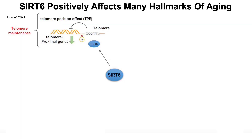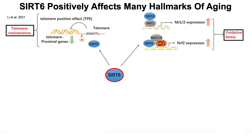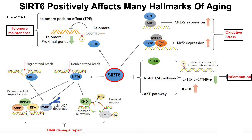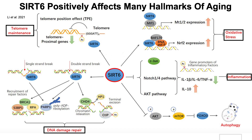How does SIRT6 extend lifespan? SIRT6 positively affects many hallmarks of aging: it is involved in mechanisms that maintain telomere length, which shortens during aging; it reduces oxidative stress, which increases during aging; it promotes DNA damage repair, including both single-strand and double-strand DNA breaks; it reduces pro-inflammatory cytokines such as IL-1 beta, IL-6, and TNF-alpha while increasing the anti-inflammatory cytokine IL-10; and it promotes autophagy, which also declines during aging.